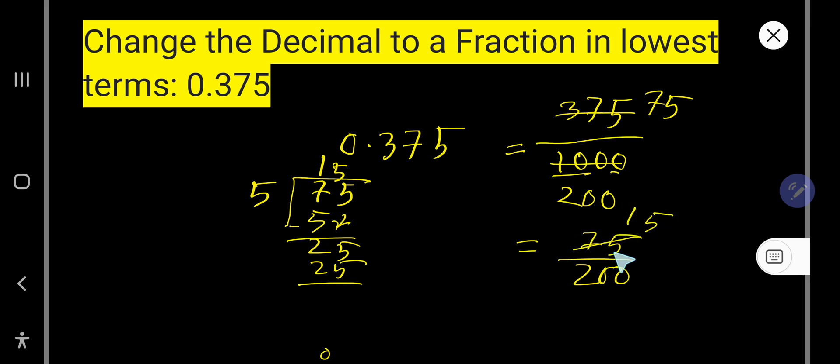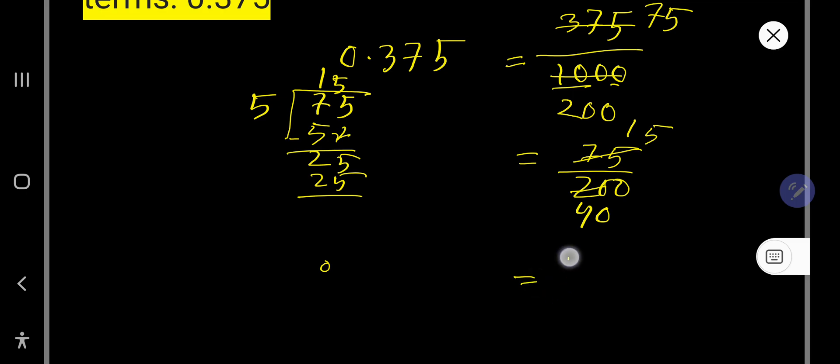So if you divide this 75 by 5 you will get 15, and if you divide this 200 by 5... Look, 5 goes into 20 four times and 5 goes into 0 zero times. So you are getting here 15 over 40.